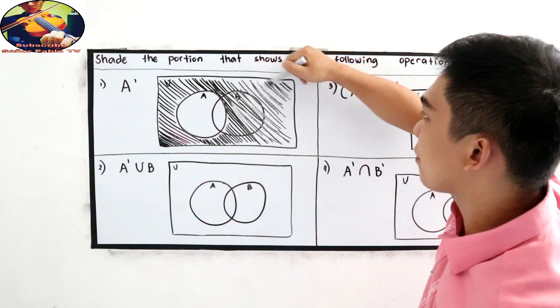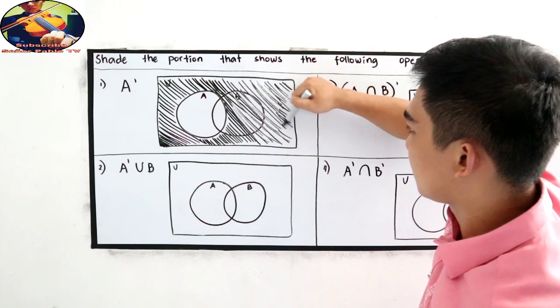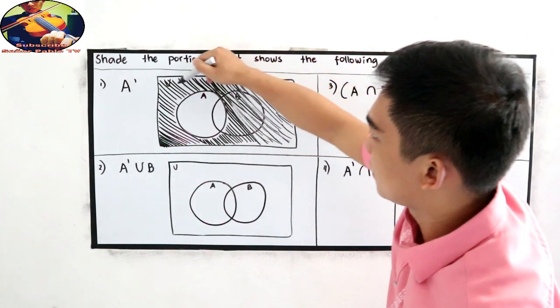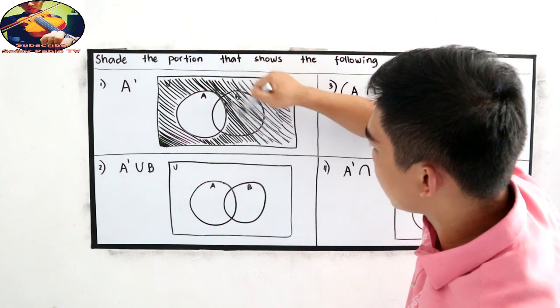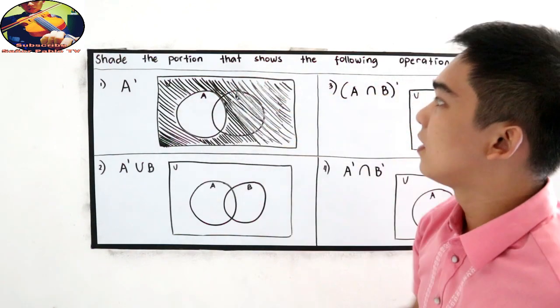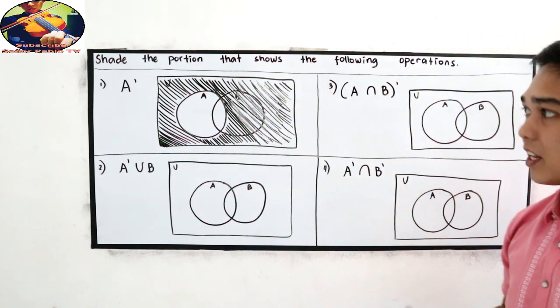Okay, this will now be our final answer. So, we will just remain set A as our unshaded part.